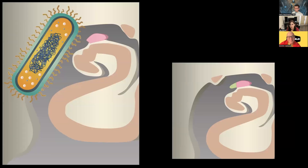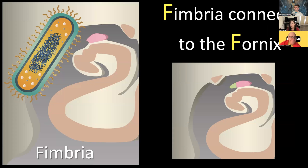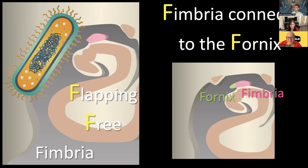Just above the hippocampus is the fimbria. Fimbria sounds like those little arms that bacteria have when you look under the microscope — kind of a little arm off the hippocampus. The fimbria connects to the fornix — F and F. That's how the hippocampus is connected to the fornix and part of the whole memory circuit. The fornix is kind of flapping free, going off away from the hippocampus. So to summarize: hippocampus, cornu ammonis, subiculum for support, entorhinal cortex along the edge, and then above it the fornix and fimbria flapping free.